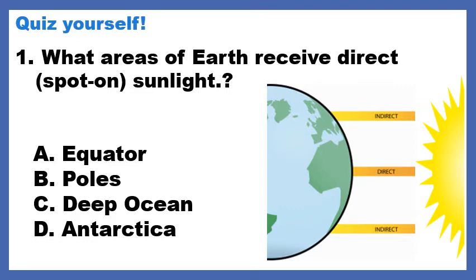Let's start off with a quiz, and this is a blast from the past — an old question. What areas of Earth receive direct or spot-on sunlight? A. The equator, B. The poles, C. Deep ocean, or D. Antarctica? There's a picture. If there's a picture with our question, we should always look at the picture. This picture gives you clues as to what parts of Earth receive direct sunlight, and your job is to hopefully remember the different parts of the globe.